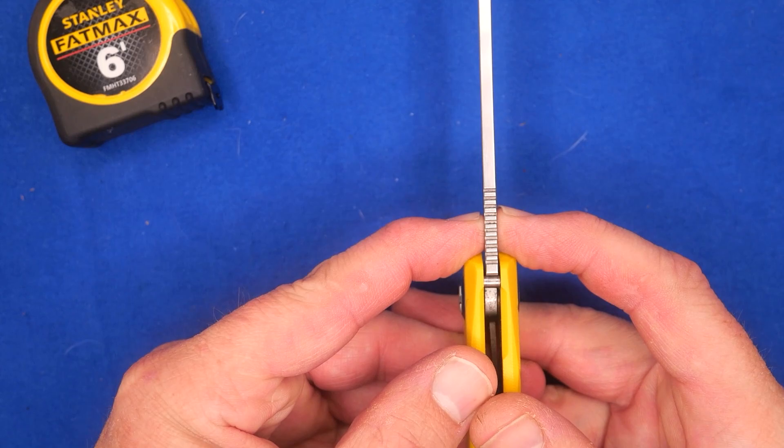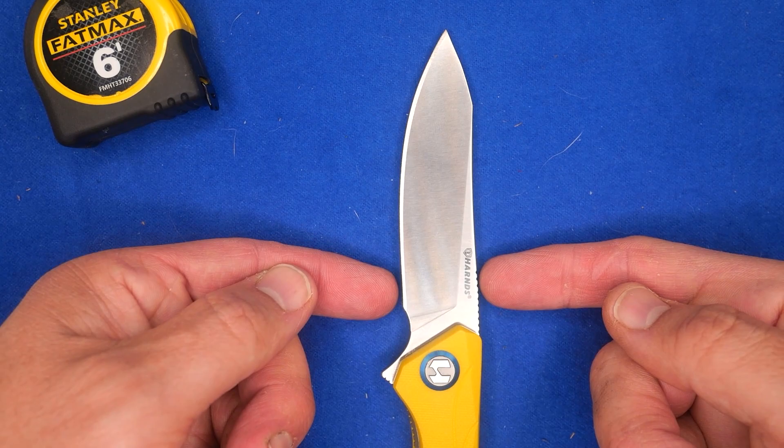The blade depth, the widest point, is right up here close to the heel of the blade. 23.1 millimeters, 0.91 of an inch.